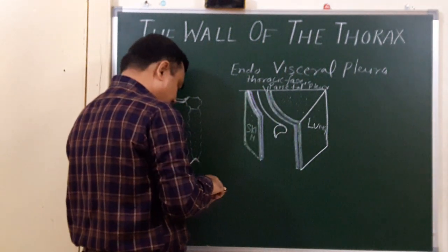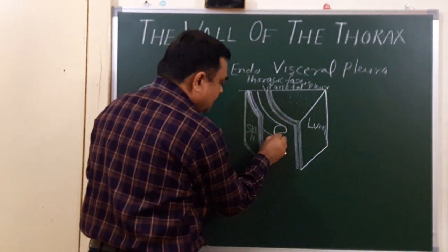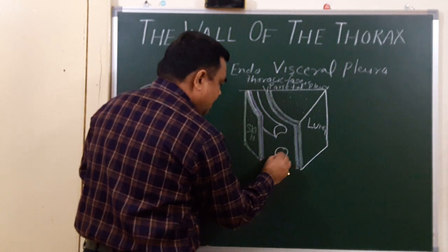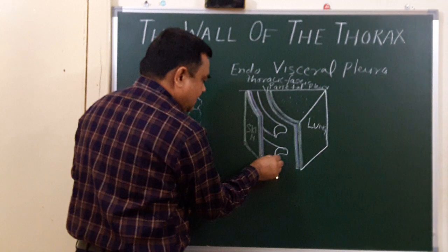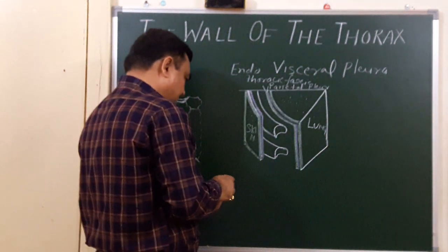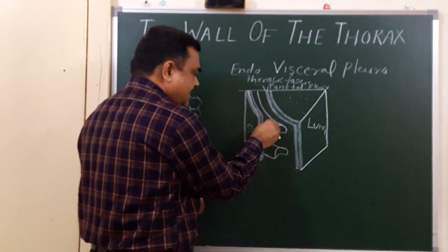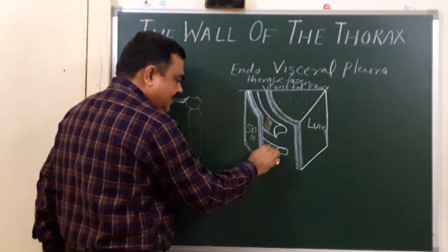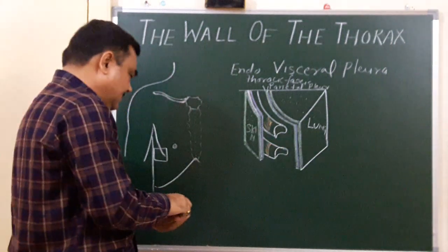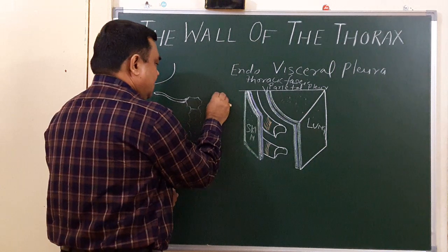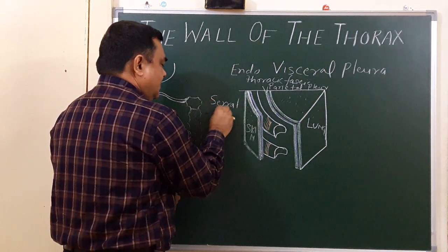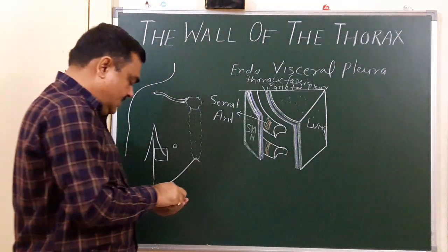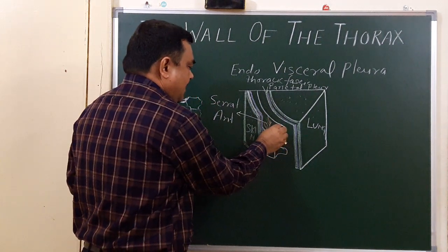Here is a rib. This is one rib, and under it lies another rib. Here are some muscles. On this side there is an attachment of muscle — this is the serratus anterior muscle, attached with the rib. This is the upper rib and this is the lower rib.